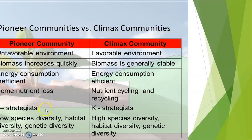Seed viability — that is, the number of seeds capable of germination — also follows an increasing trend as we go from pioneer to climax community. Light saturation intensity is high in pioneer and low in climax. Photosynthetic rate is more in pioneer and less in climax. Seed dispersal is by wind and by animals. Efficiency to low light is low in pioneer and high in climax.